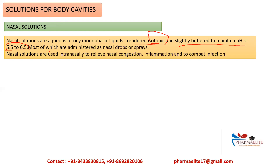Nasal solutions should be slightly buffered to maintain a pH of around 5.5 to 6.5, which is the pH of the nasal mucosa. Most are administered as nasal drops or sprays. They are used to relieve nasal congestion — in congestion, blood vessels of the nasal mucosa become inflamed and block the air passage. Decongestants cause vasoconstriction, opening the airway. These drugs are given intranasally to reduce congestion, inflammation, and to combat infection.